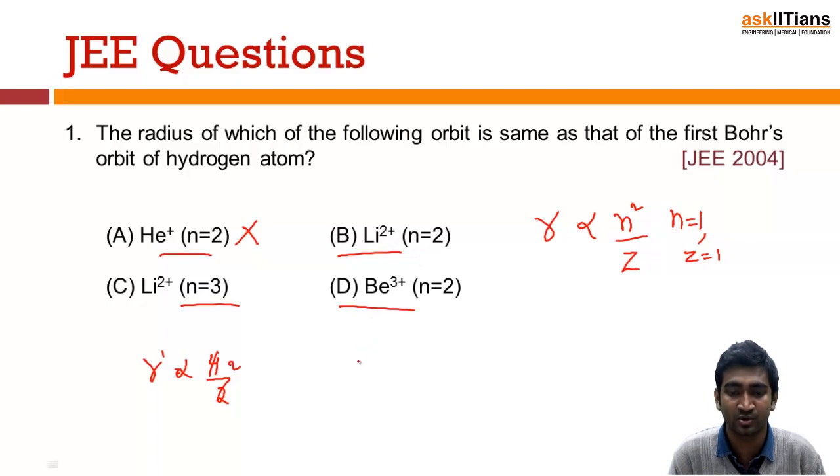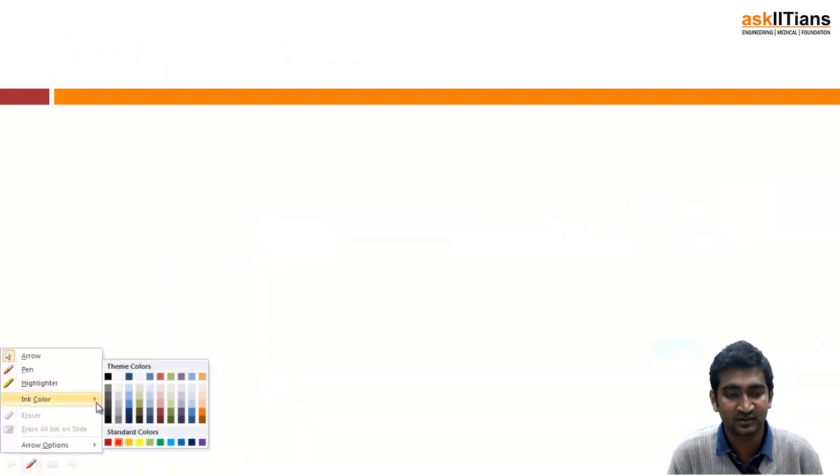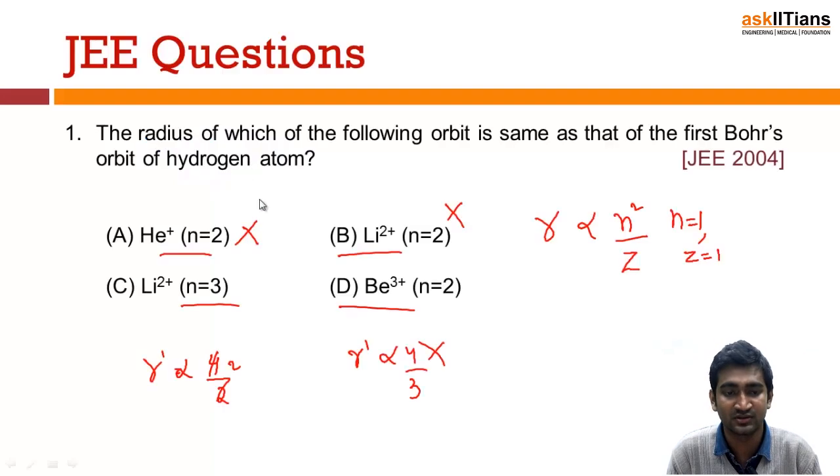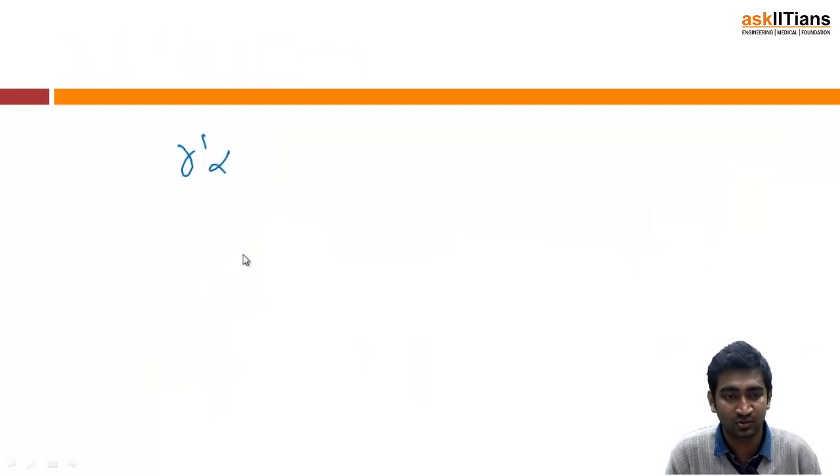Check for Li2+ when n=2. R dash will be directly proportional to 4 by 3, where 3 is the atomic number. This is not correct. If I go for Li2+ when n=3, then my R dash will be proportional to 9 by 3, which gives me 3. But I need 1 guys, I'm not getting it.